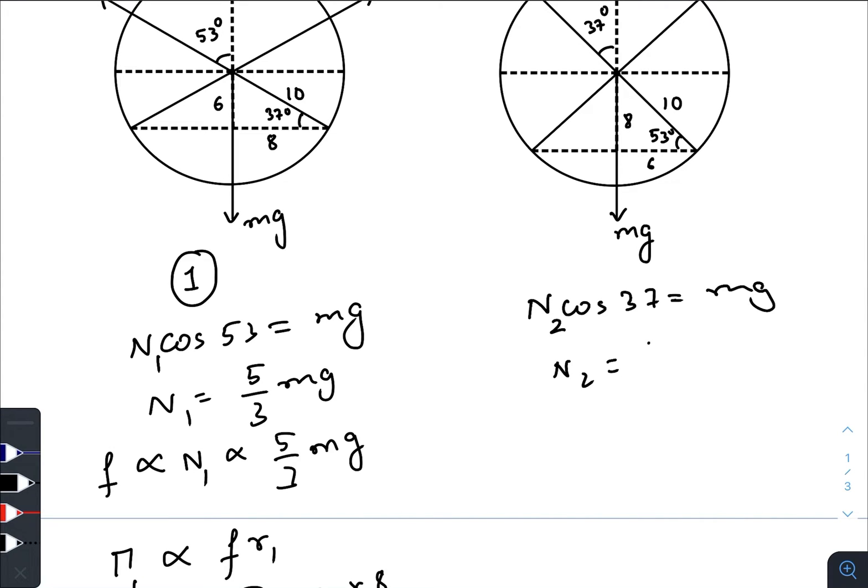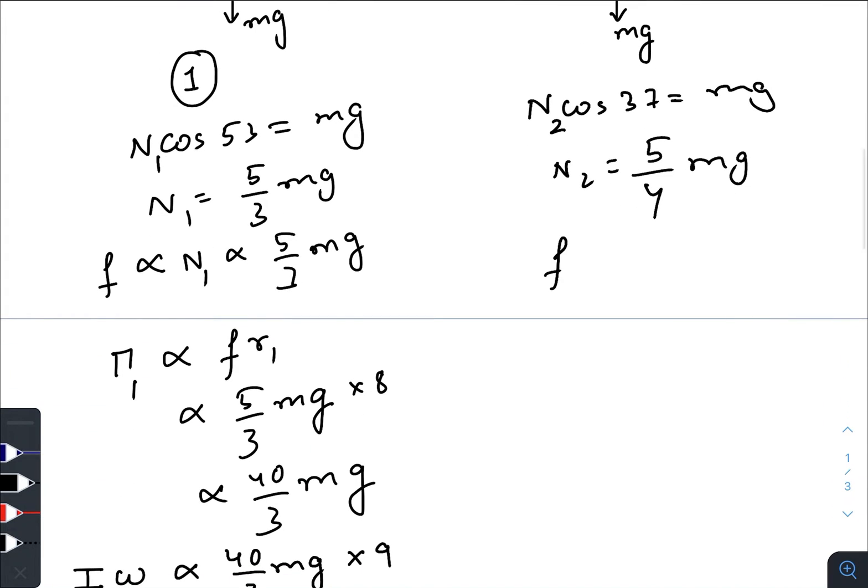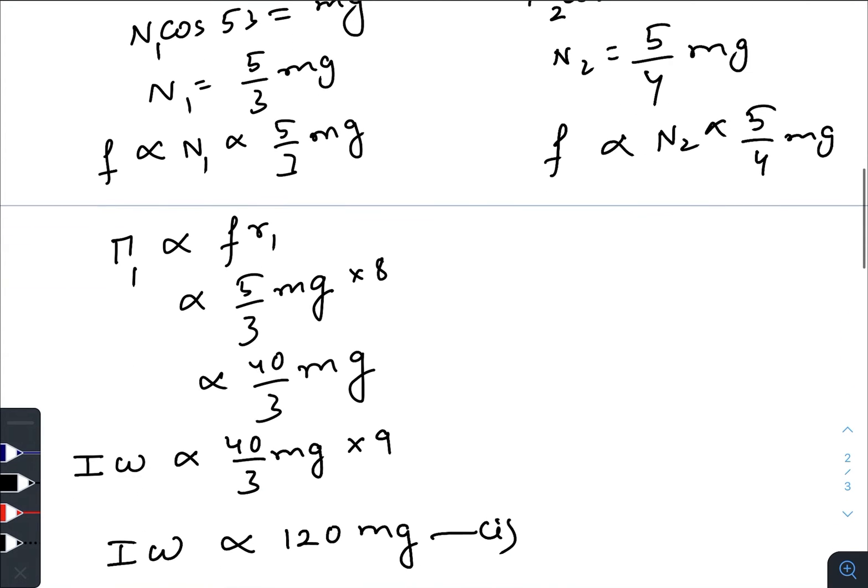Now here the frictional force will be directly proportional to N2, that is directly proportional to 5/4 mg. So the torque in the second case will be directly proportional to f times r1, so that is 5/4 mg. What is r1 here? It is six centimeter.